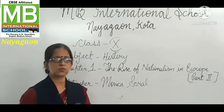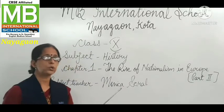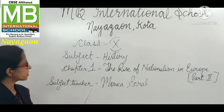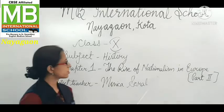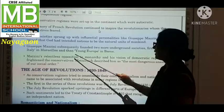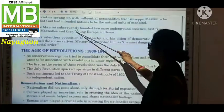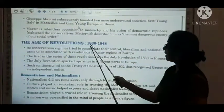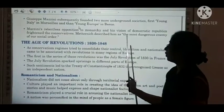Today we will be doing the first chapter of history: The Rise of Nationalism in Europe, Part 2 — The Age of Revolutions. The age of revolution spans from 1830 to 1848.